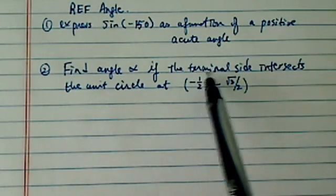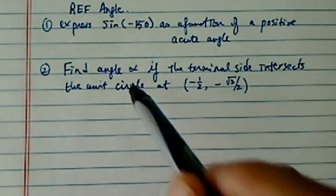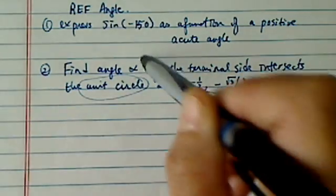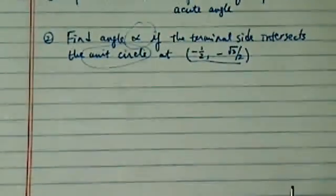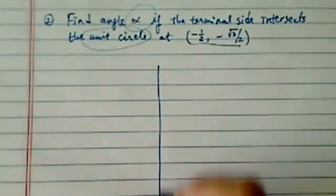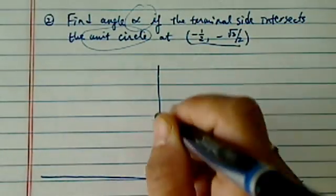The second one, we're given a terminal side intersect the unit circle at a point, and we're supposed to find out what the angle is. The best way to solve this one is actually using a unit circle.